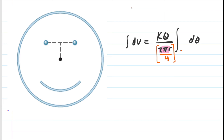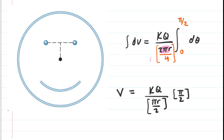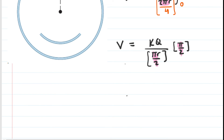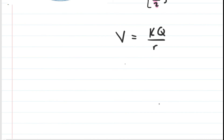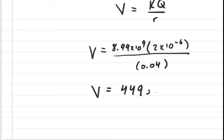Similarly, when we set up the bounds for the smile, we don't go from 0 to 2π — we only go from 0 to 90 degrees, or π/2 radians. The left side is again V. We have k·Q over (2πr/4), which simplifies to k·Q over (πr/2). We integrate dθ to get theta, evaluated from 0 to π/2. Plugging in π/2 for the upper bound, the π/2 in the numerator and the π/2 in the denominator cancel each other out. So we're left with the same expression: V = kQ/r — we just plug in Q and r for the smile. This turns out to be positive 449,500 volts.